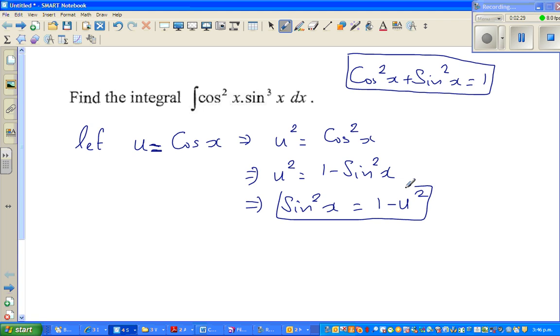Okay, so I have expressed u as cos x, then I have expressed sine squared x in terms of u. And I have got one more cos x, sine x sitting here, because it's sine cube x. So let me differentiate this.